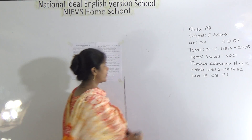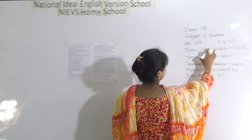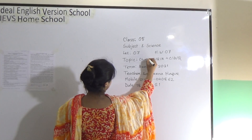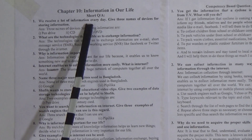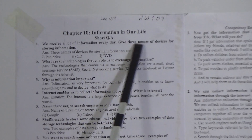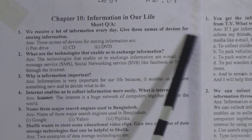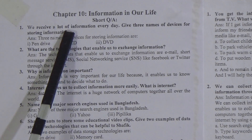Dear students, the topic will be Chapter 10 — short question answers and competency-based question answers. The name of the chapter is 'Information in Our Life.' The first short question is: we receive a lot of information every day — give three names of devices for storing information.